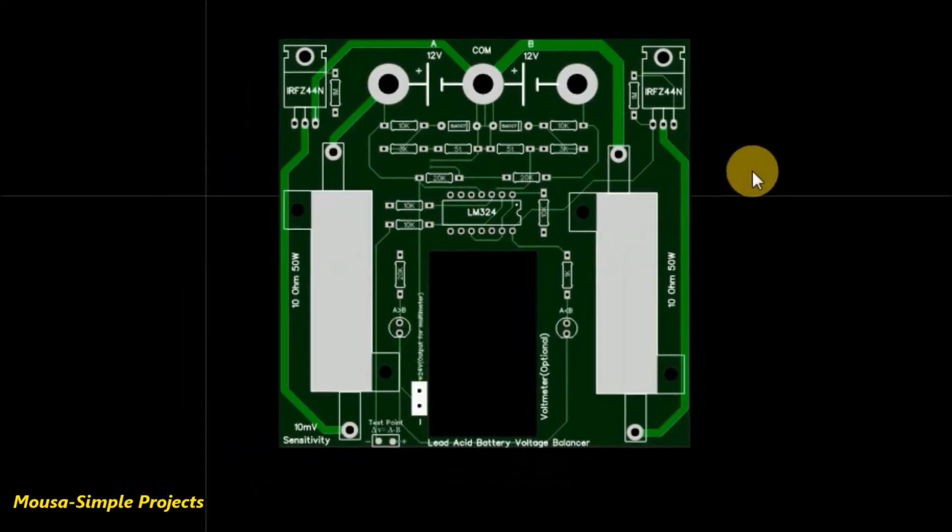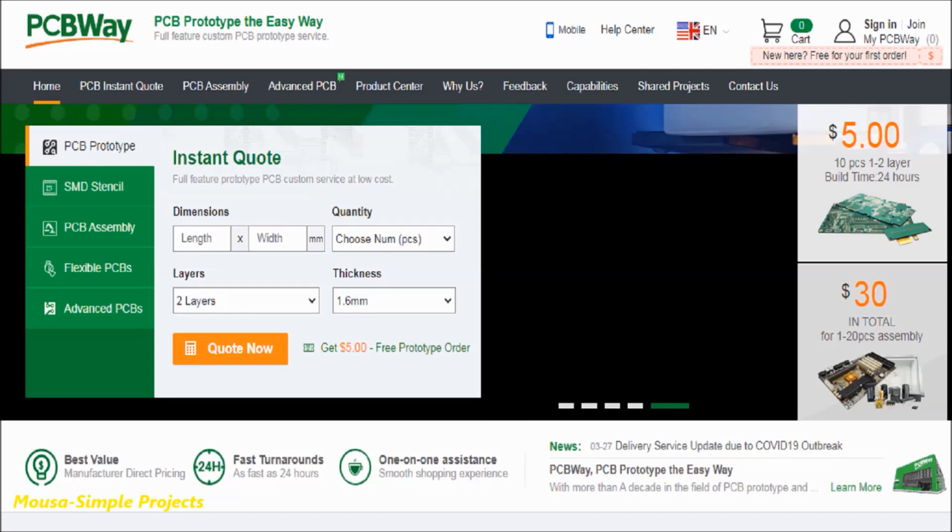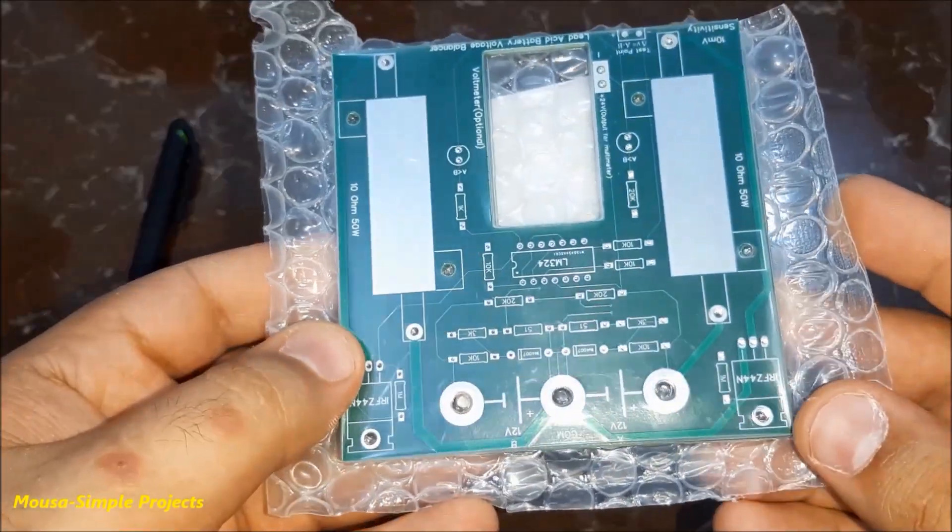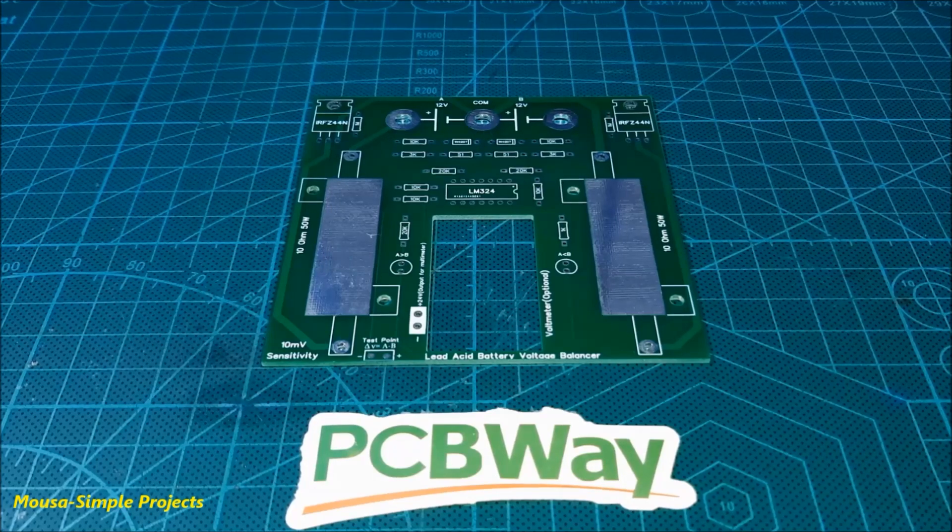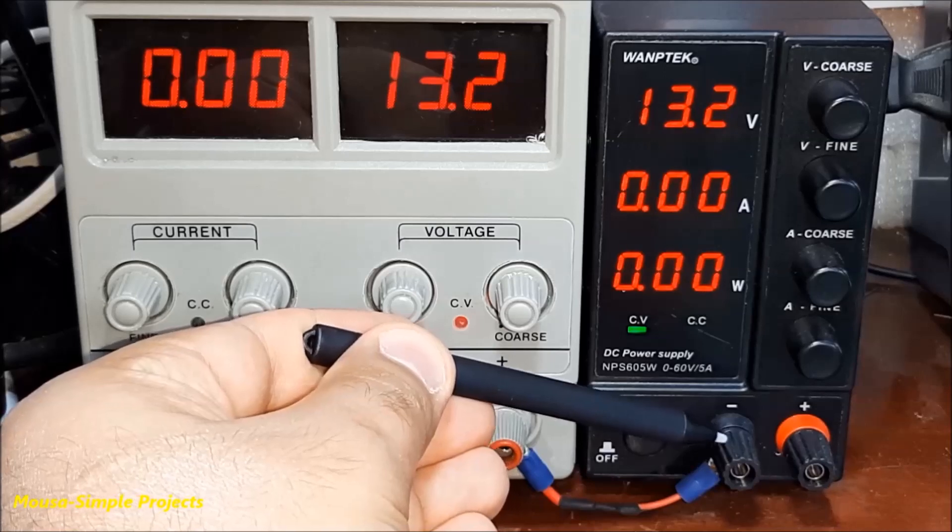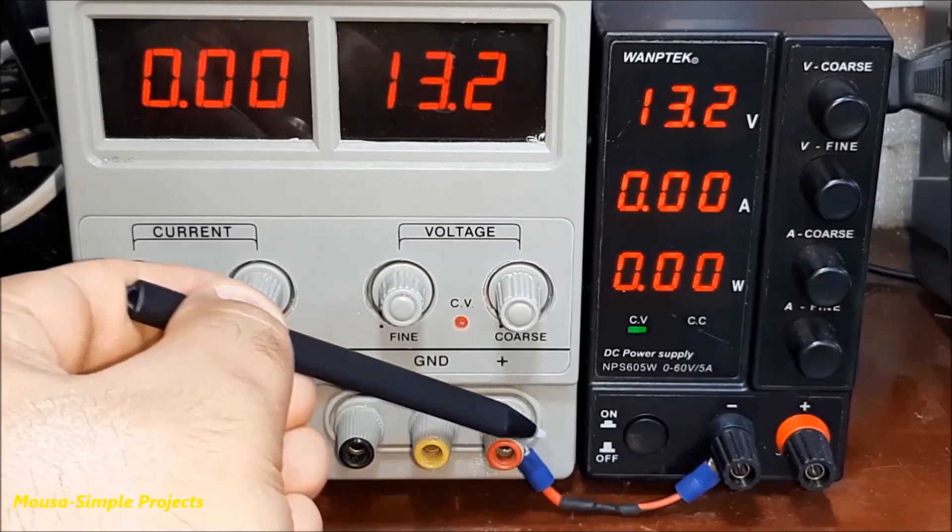I converted this circuit to PCB and ordered it from PCBway.com. After a few months, I received my package. Then I soldered the components on the PCB. To simulate two batteries in series, I just connect two power supplies together as shown here.